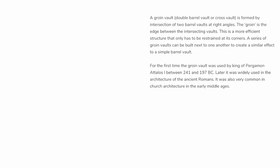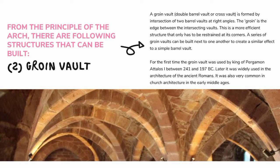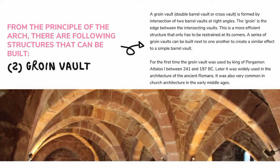Groin Vault. A groin vault, also known as a double barrel vault or cross vault, is formed by the intersection of two barrel vaults at right angles. The groin is the edge between the intersecting vaults. This is a more efficient structure that only has to be restrained at its corners. A series of groin vaults can be built next to one another to create a similar effect to a simple barrel vault. The groin vault was first used by King of Pergamon Attalos I between 241 and 197 BC, and was later widely used in ancient Roman architecture and in church architecture in the early Middle Ages.